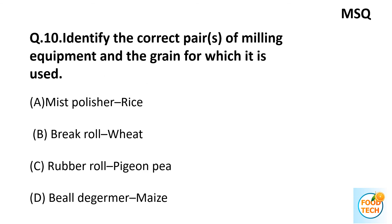Question 10: Identify the correct pair of milling equipment and the grain for which it is used. It is a multi-select question: A. Misson polisher on rice, B. Break roll with wheat, C. Roller mill on pea, D. Disc mill matched correctly. The correct answers are B and D.